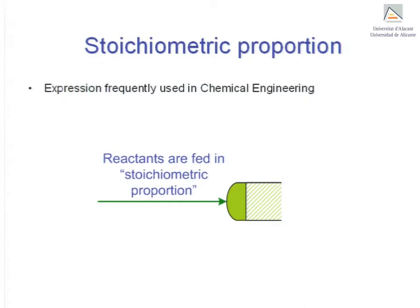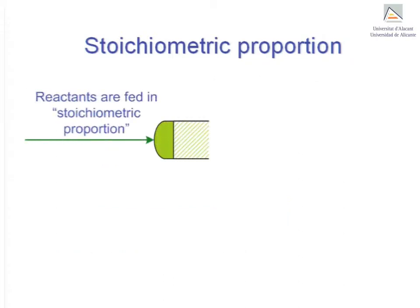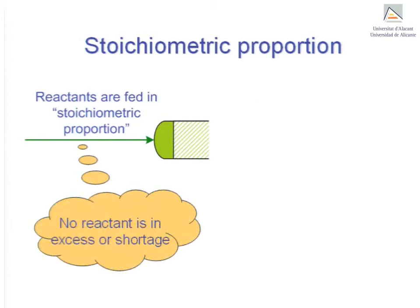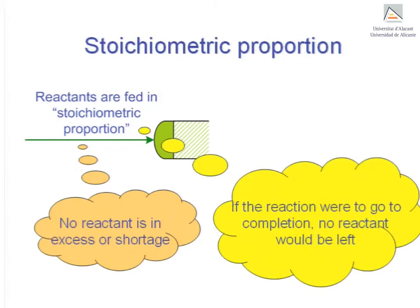It is usually associated with processes involving chemical reactions, although that does not always have to be the case. What stoichiometric proportion tells us is that neither a relative shortage nor a relative excess of reactants are fed to the process, and thus that, should the reaction be allowed to go to completion, all the reactants would be consumed.